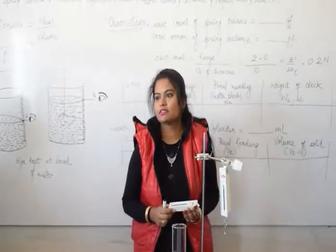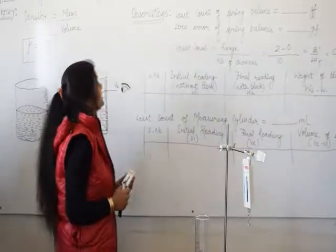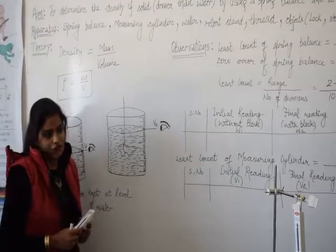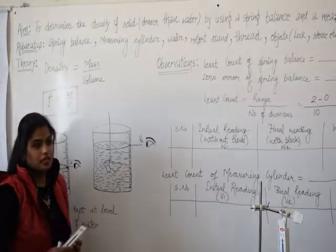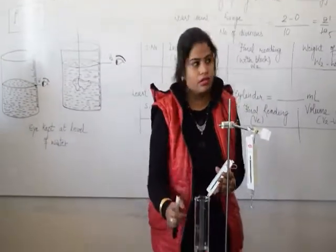Good morning class. Good morning ma'am. Today we are going to perform an experiment and the aim of that experiment is you can see here to determine the density of a solid. We have to take a solid which is denser than water by using a spring balance and this measuring cylinder.